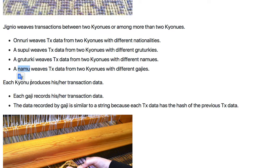NAMU weaves transaction data from two gyonus with different gajis. That is, if two people belong to the same family — for example, Adam's family — and they send money to each other, then the transaction shall be recorded by NAMU.